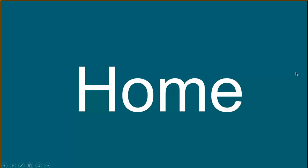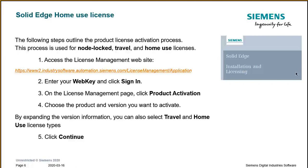Thank you, Madison. Working remotely can become a fact of life for you and your organization, so today we're going to focus on several different options to help accomplish this. First up is the home use license, which is very useful when you need to work from home. The following steps outline the process of activating this particular license. First, you need to access the license management website — you can see the link on the screen. You'll need a WebKey account and another piece of information we'll discuss on the next slide.